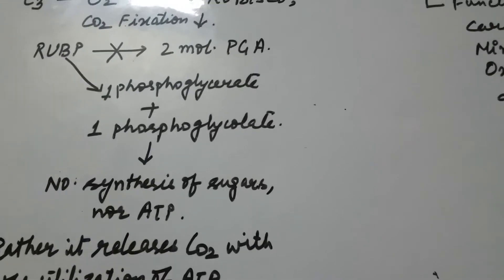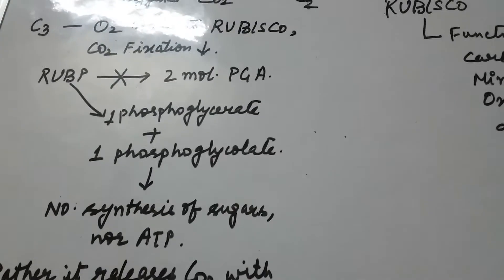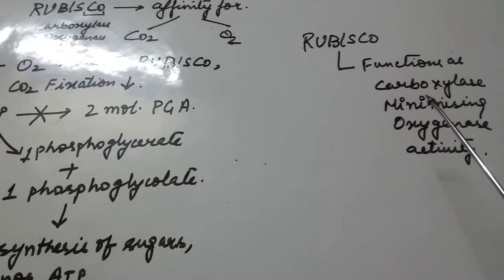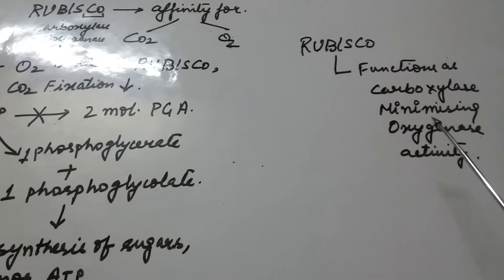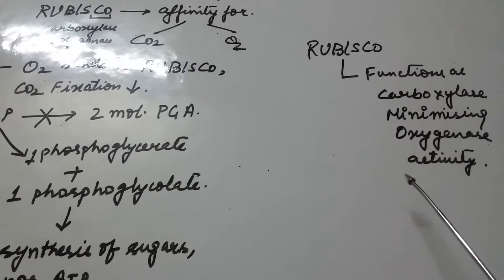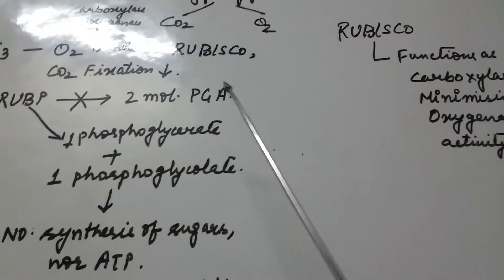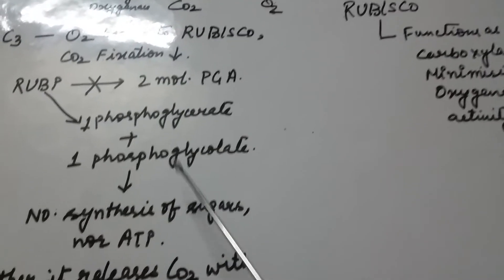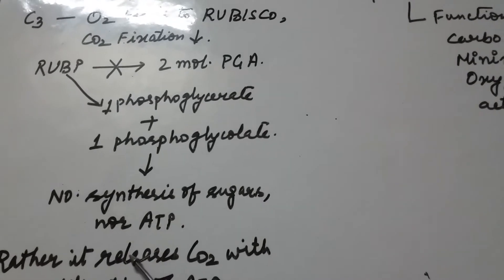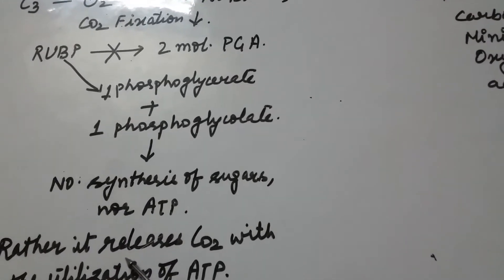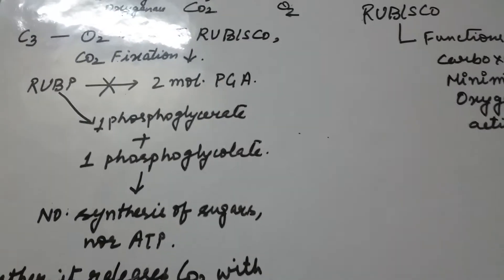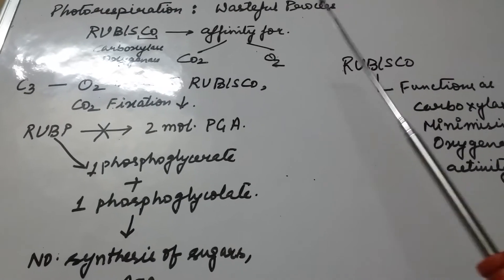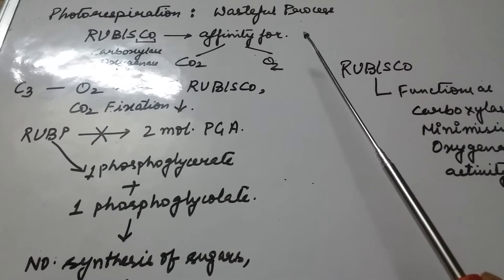Therefore, RuBisCO functions as a carboxylase, but its oxygenase activity minimizes carbon dioxide fixation. Since no glucose or ATP is formed, and ATP is actually consumed, this process is called a wasteful process.